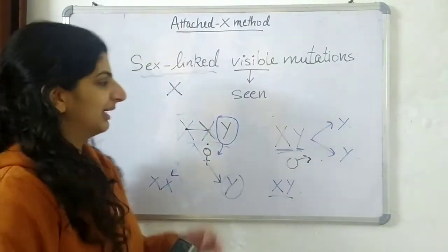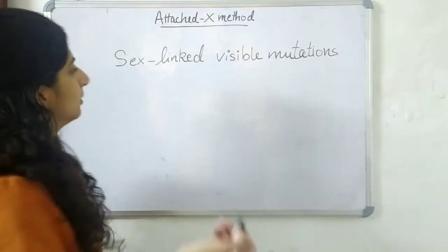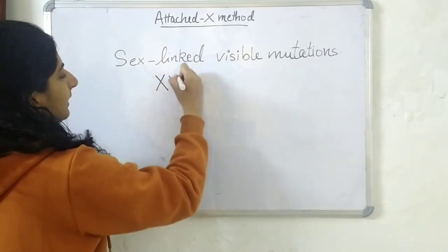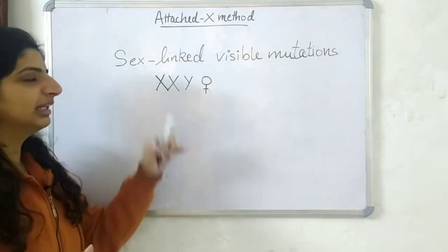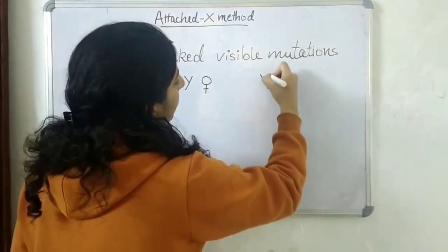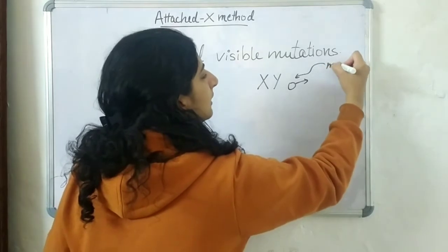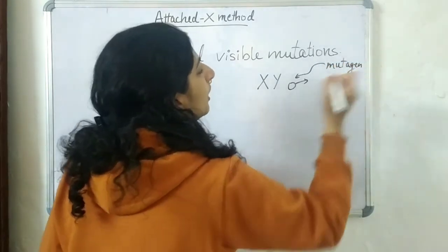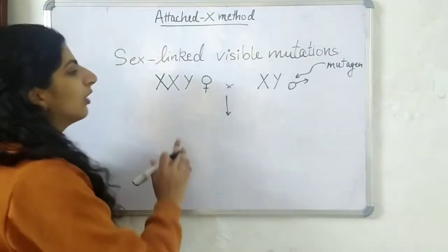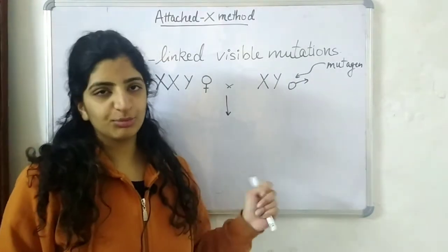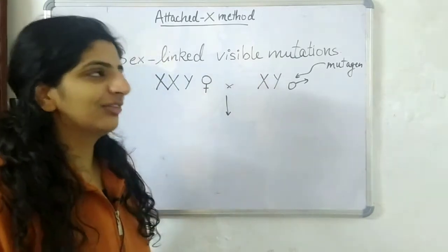Now let's go into the cross that will determine if mutations are present. We have taken an attached X female — remember, it is a female even though there is a Y present — and we have taken a normal male. This normal male has been treated by a mutagen, which is any chemical substance that can induce a mutation in a gene. Crossing these two individuals will give us four different types of progeny. You can pause the video here and try to work out the results yourself.